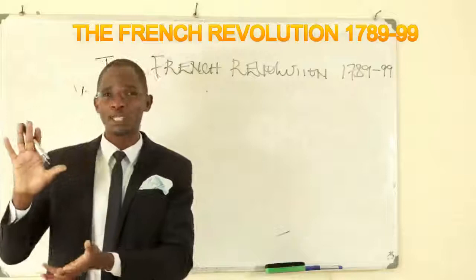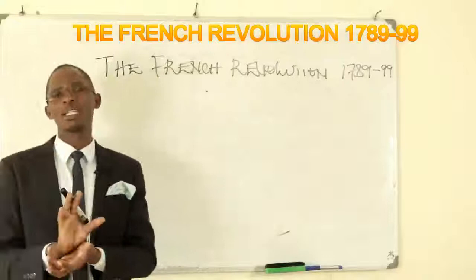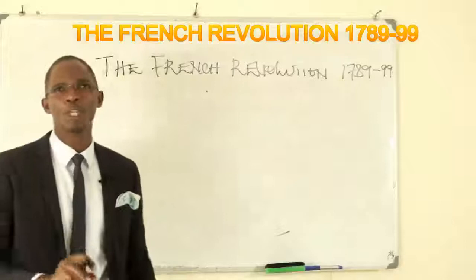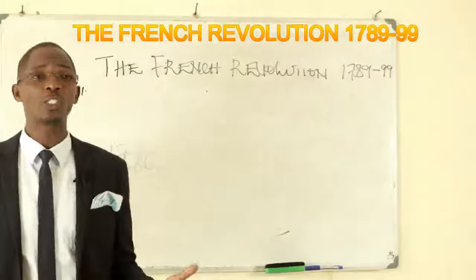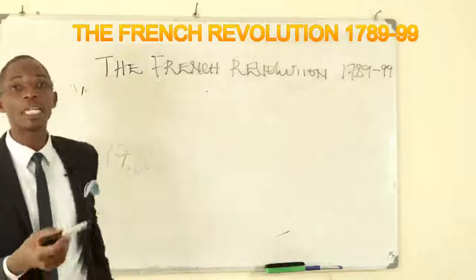Let us look at the weaknesses of King Louis XVI. We ended at a point where King Louis signed an unfair commercial treaty with Britain in 1786. When King Louis signed this unfair commercial treaty, why did he have to sign it? King Louis realized that among other countries, he needed close relations with Britain.